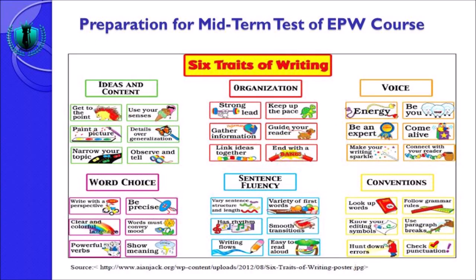The first slide is about six traits of writing, which are very important to understand before you step further into the midterm task of EPW course. Six traits of writing artinya adalah enam unsur atau aspek yang berkaitan dengan writing atau proses menulis. Karena bahasa Inggris mengenal istilah gerund yang berfungsi sebagai noun, makna dari six traits of writing adalah enam unsur pokok yang ada di dalam tulis menulis, dalam konteks bahasa Inggris.